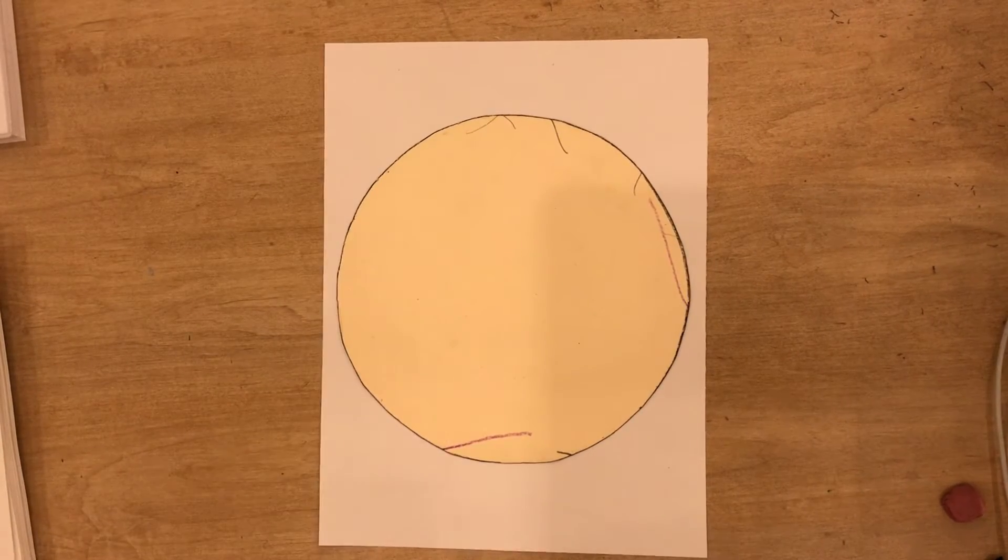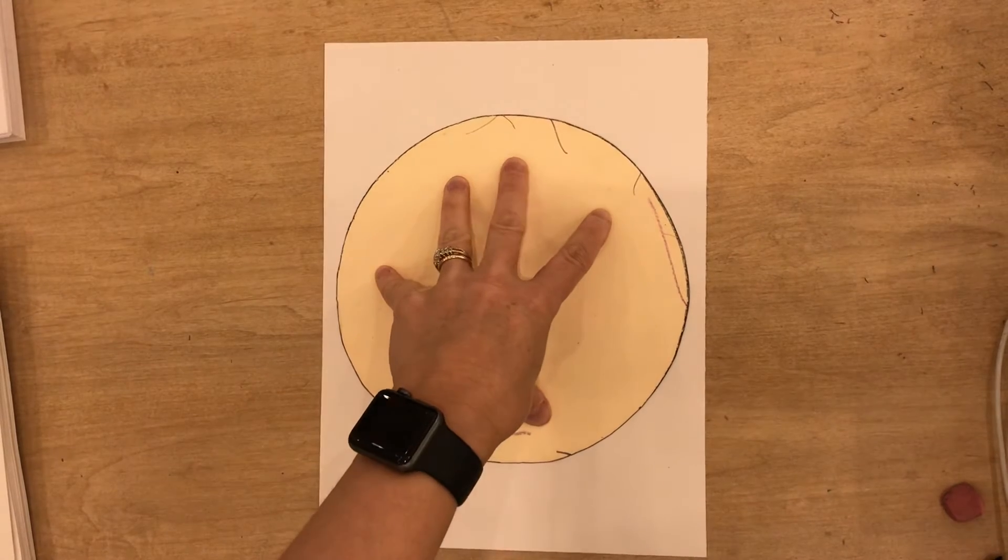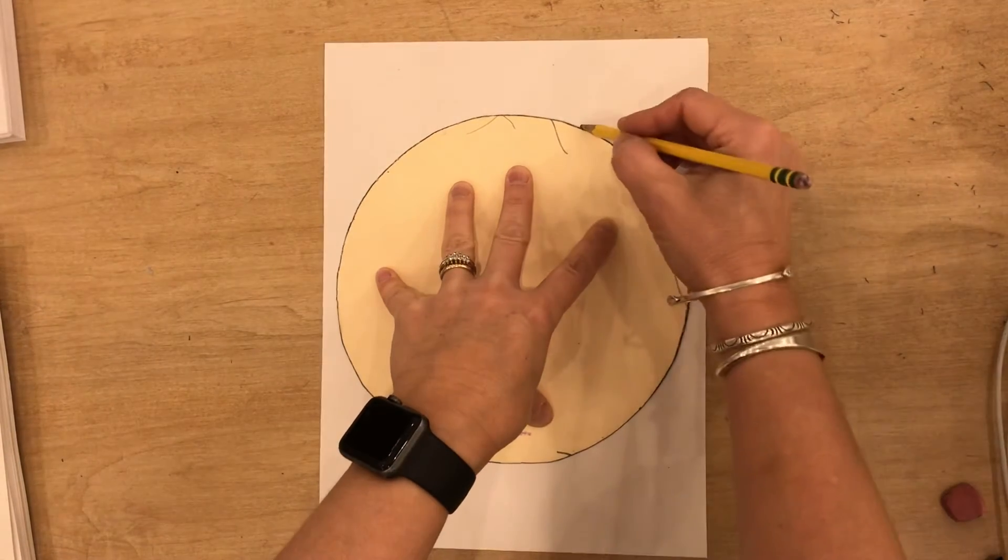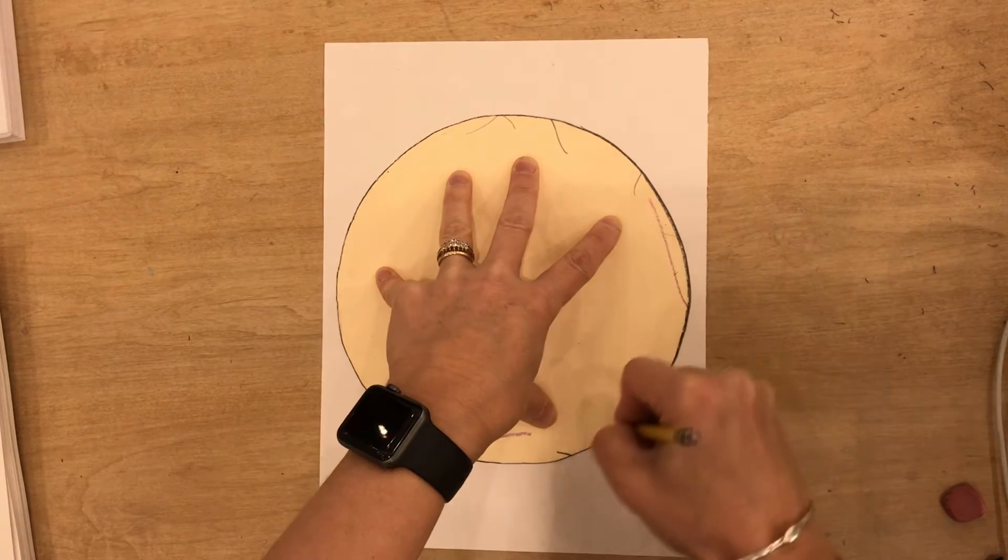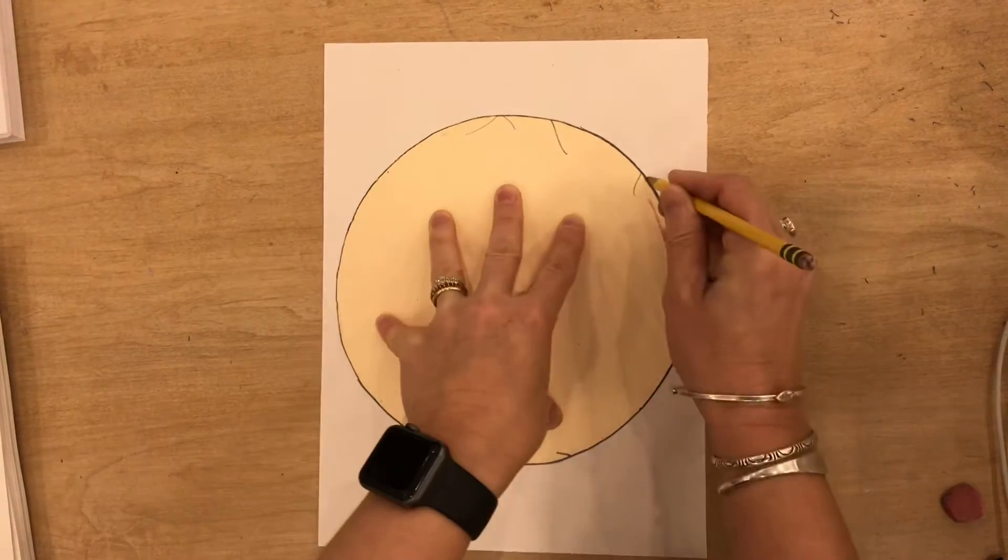What you're going to do is place your tracer down, hold it in the middle, and maybe somebody at your table can help you. Then you're going to use your pencil and trace the outside circle of your tracer.